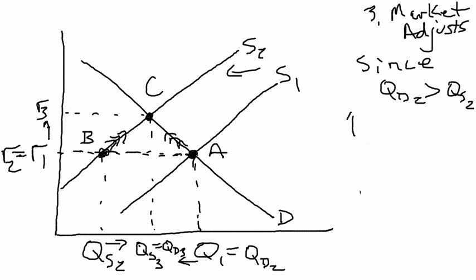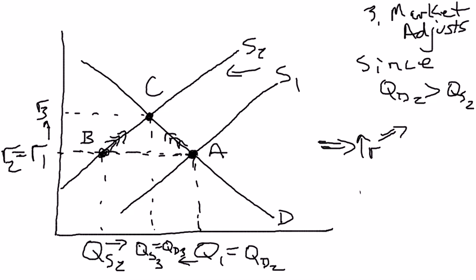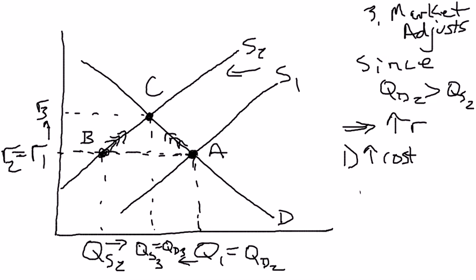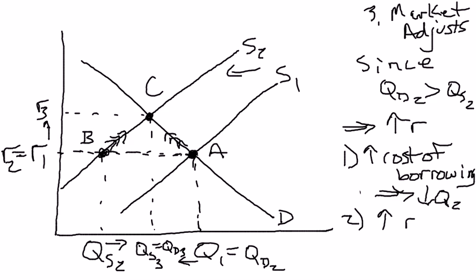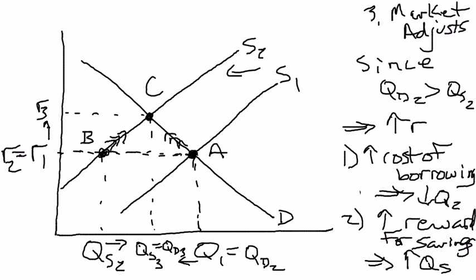So since there was a shortage, that led to an increase in the real interest rate, which did two things: first, it increased the cost of borrowing — the higher the real interest rate, the more costly it is to borrow — which decreases quantity demanded. And second, it increased the reward for savings, which leads to an increase in quantity supplied. And you stop when you reach equilibrium point C.